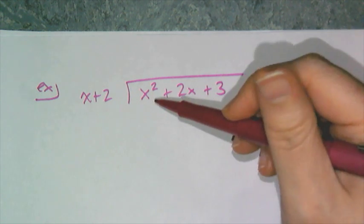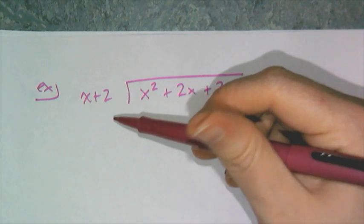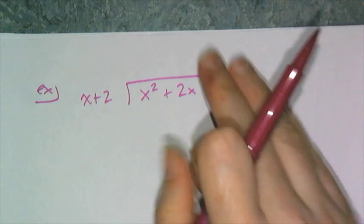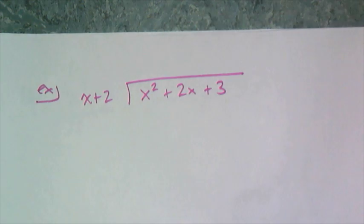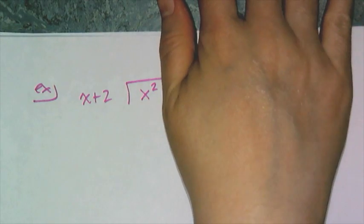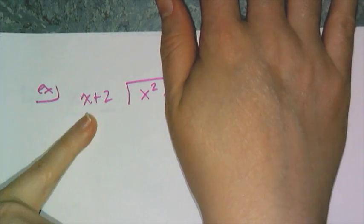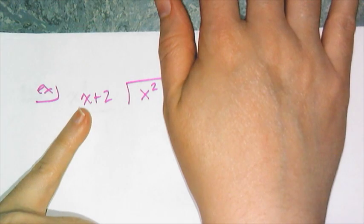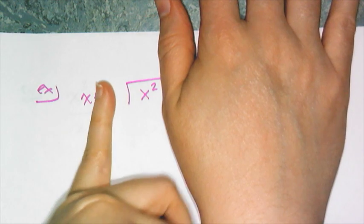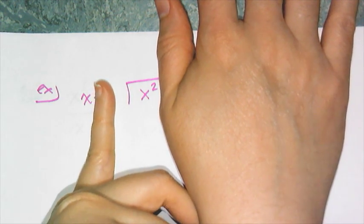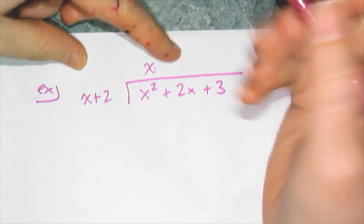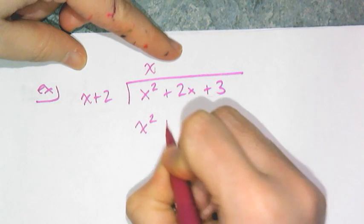I have x² + 2x + 3 divided by x + 2. I'll do the same thing, but instead of place values I look at terms one at a time. I look at the x² and think: what do I have to multiply x + 2 by to get x² as the first term? Looking at just the x, I have to multiply by x. Then I take x and multiply it by x + 2, giving me x² + 2x.